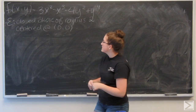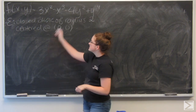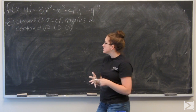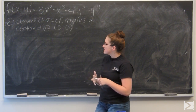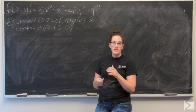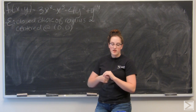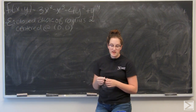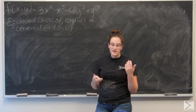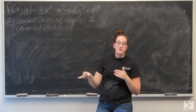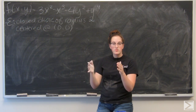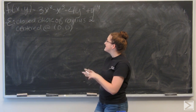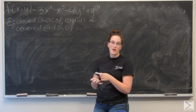For this question, I'm given a function f and E, which is a closed disk of radius 2 centered at (0, 0). I want to find the maximum and minimum values of f on that region E and then say where each of those values occurred — basically find the points that are the extrema and then the function value at those points.